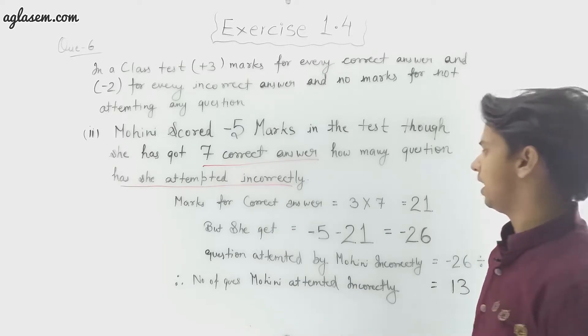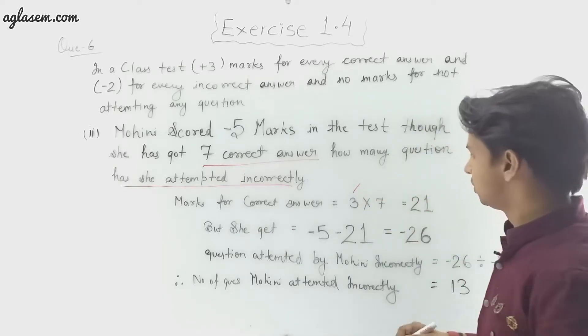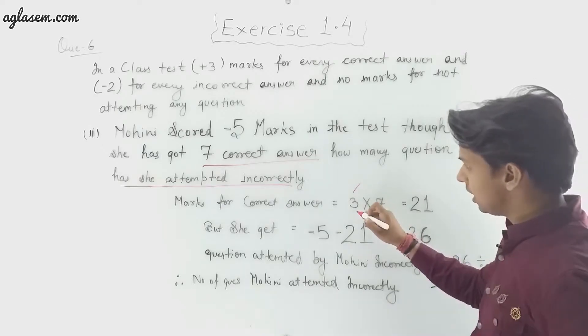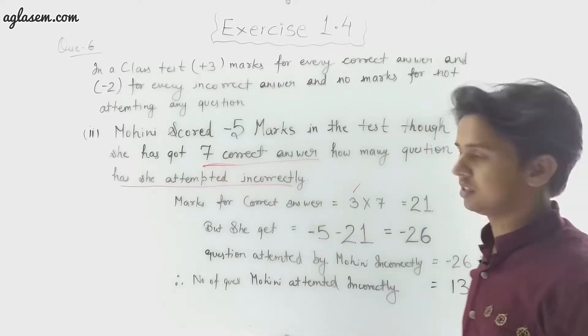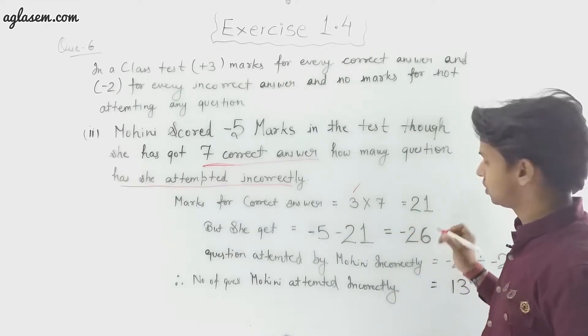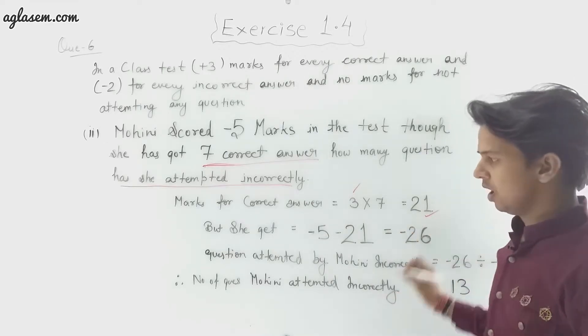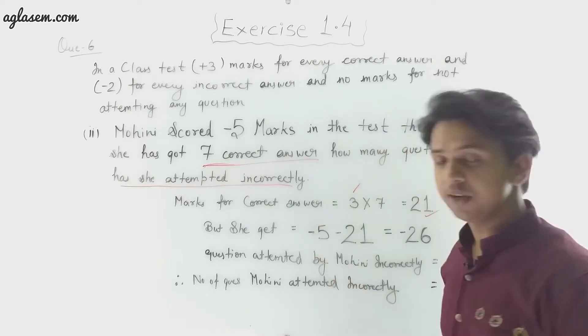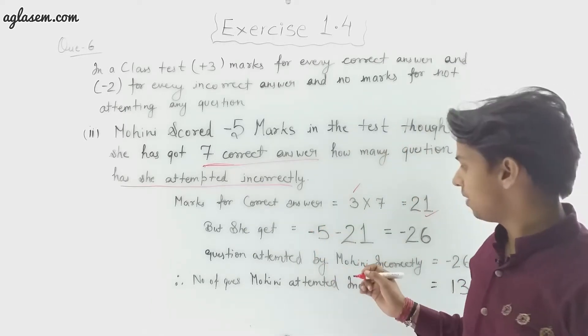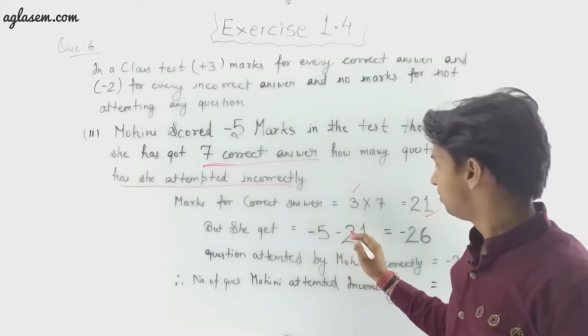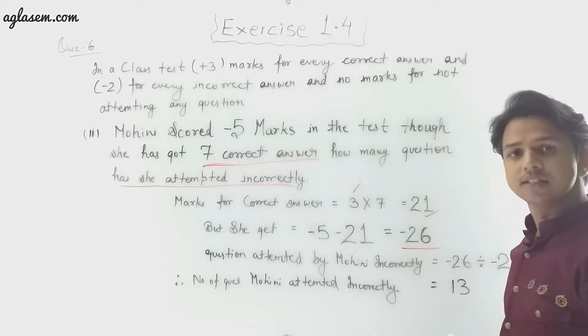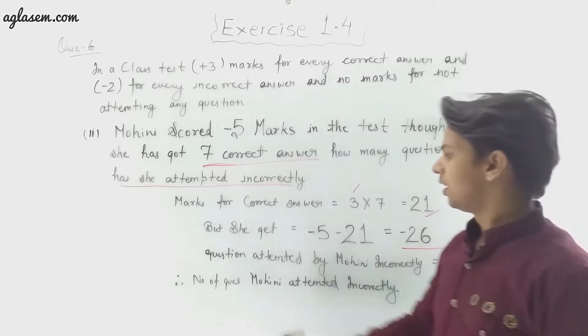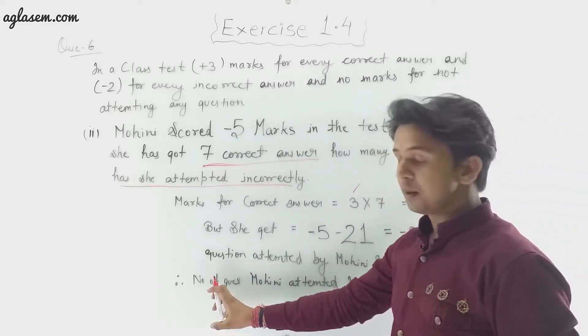We have to find how many questions she attempted incorrectly. Marks for correct answer equals 3, so we have to do 3 × 7 because she had 7 correct answers. So 3 × 7 = 21. But she got -5, so we have to do -5 - 21 = -26.